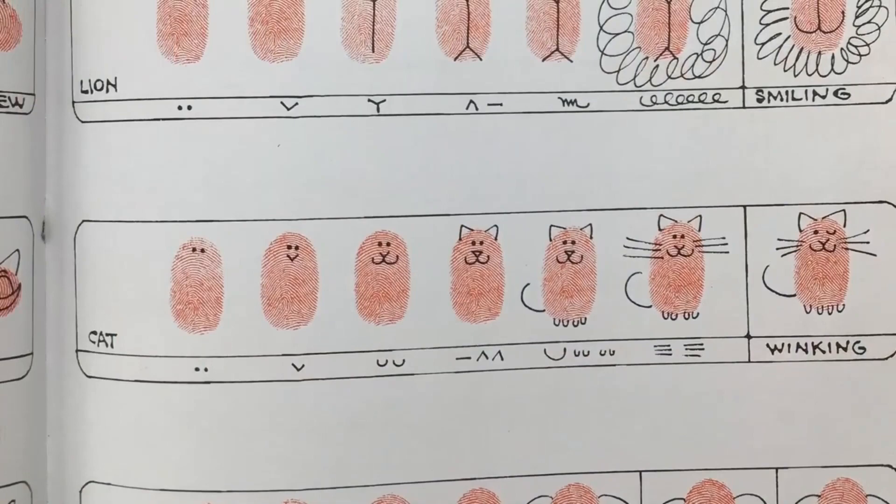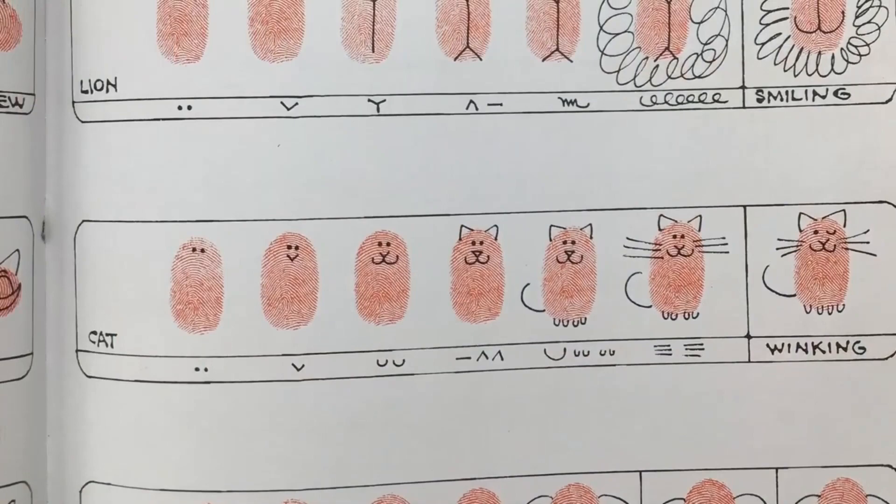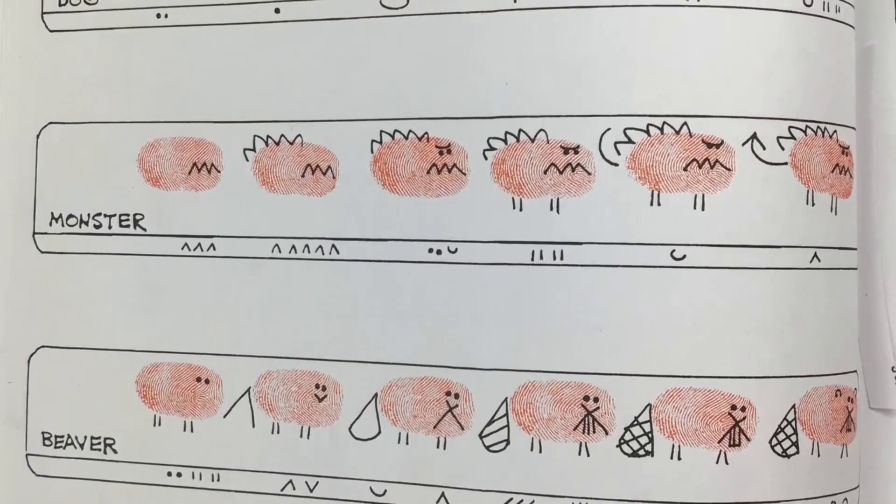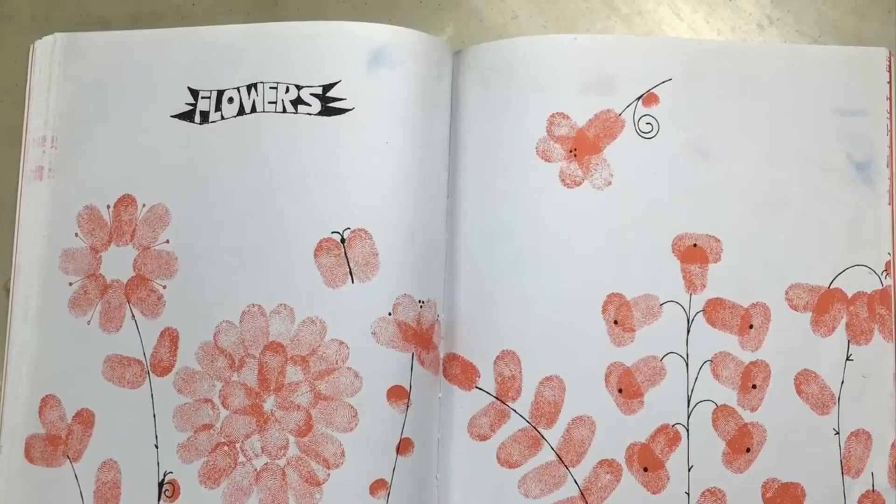Some pigs. A cat. A lion. A monster. And a beaver. I like beavers. Here are some flower ideas. These are very nice.